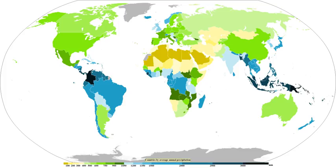Most precipitation occurs within the tropics and is caused by convection. The movement of the monsoon trough, or intertropical convergence zone, brings rainy seasons to savannah climes.